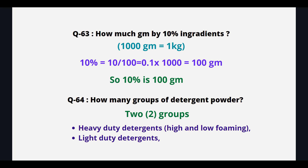How much is 10 percent in grams? We know 1000 grams is equal to 1 kg. 10 percent means 10 divided by 100 equals 0.1, multiplied by 1000, which equals 100 grams. So 10 percent is 100 grams.